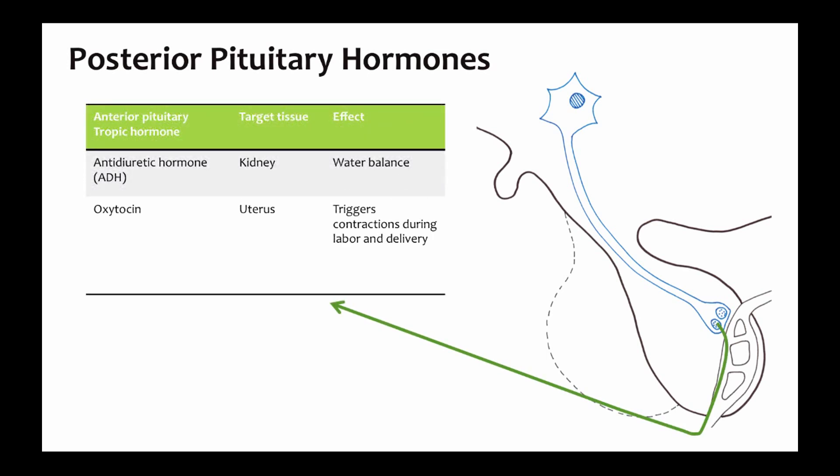There are only two posterior pituitary hormones to remember: anti-diuretic hormone and oxytocin. Both of these hormones act on non-endocrine target cells in the kidney and female reproductive tract, and oxytocin also plays a role in social behavior.